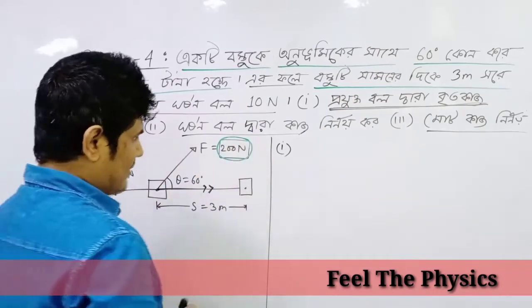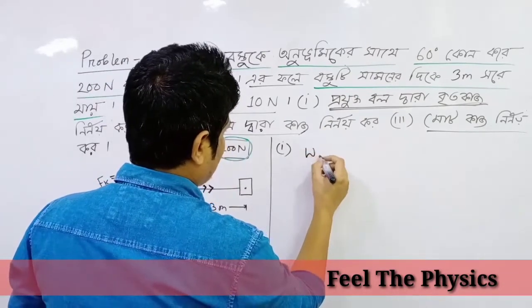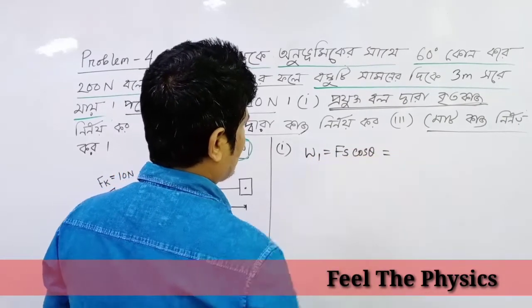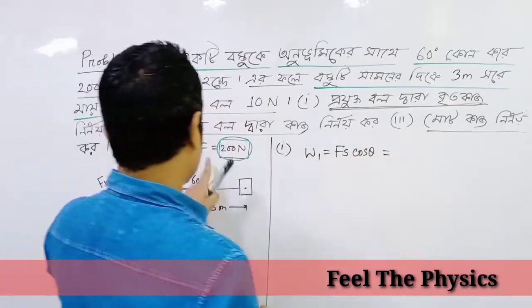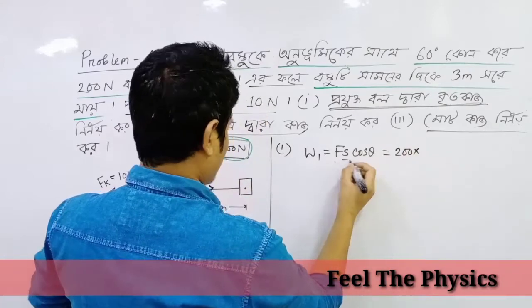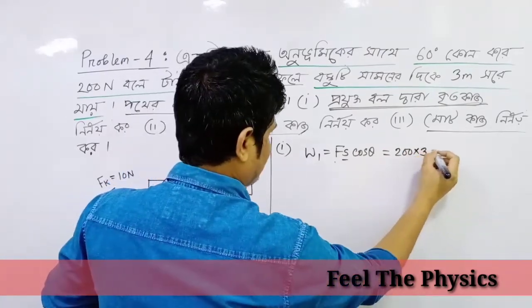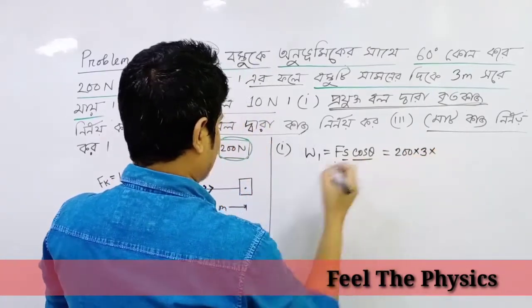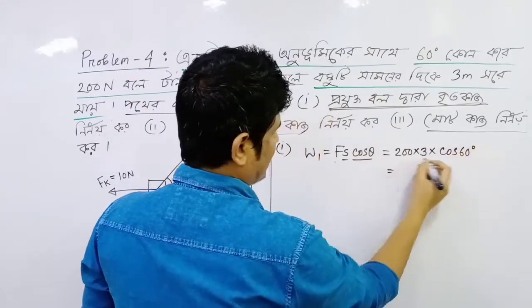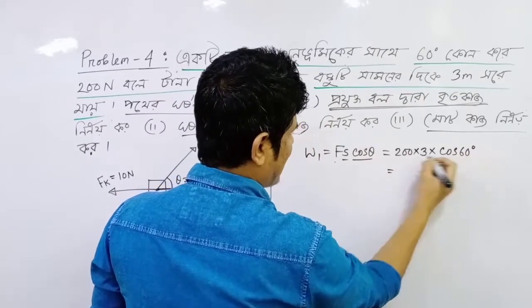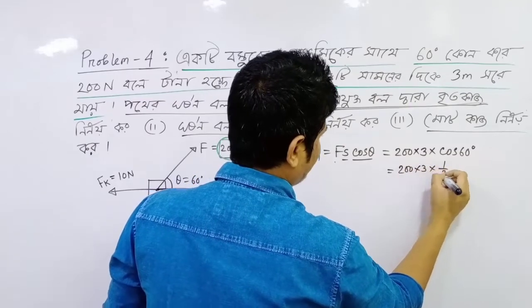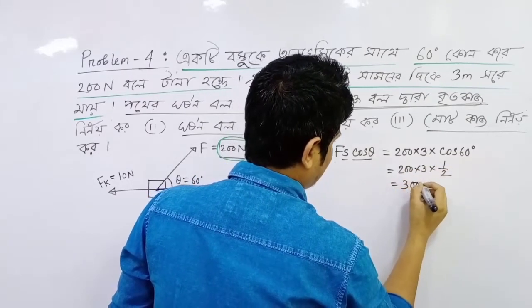We know that W1 is equal to fs·cosθ. So F is equal to 200 N, s is equal to 3 meters, and the angle is cos 60 degrees. So W1 is equal to 300 J.